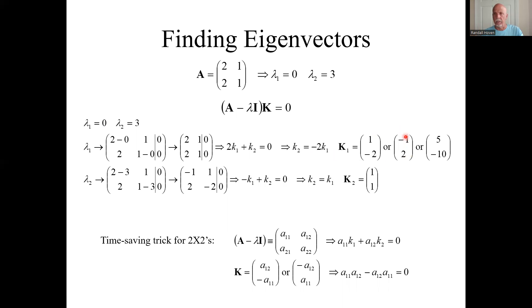I'm going to switch the sign. Any multiple - any of these would be legitimate eigenvectors. They're not linearly independent of each other. In fact, they're scalar multiples of each other.